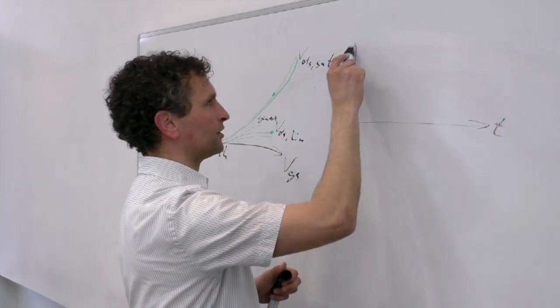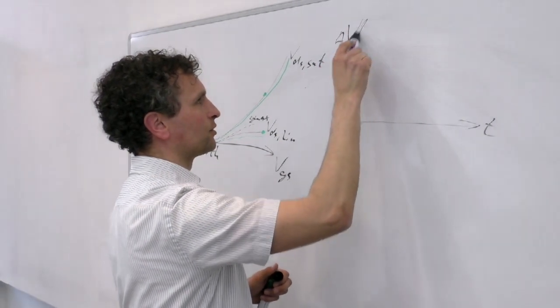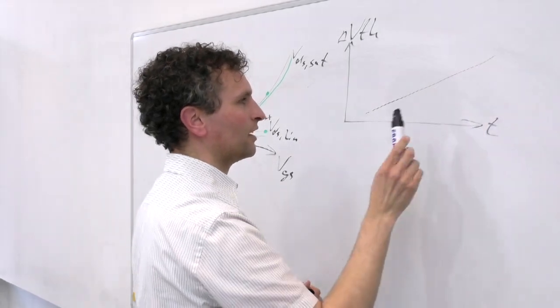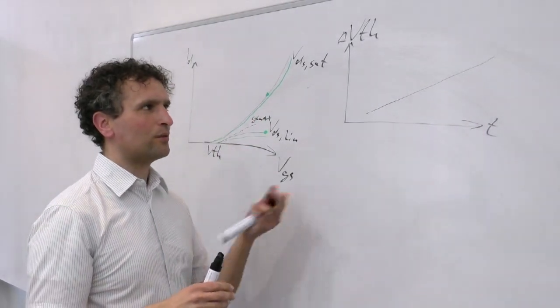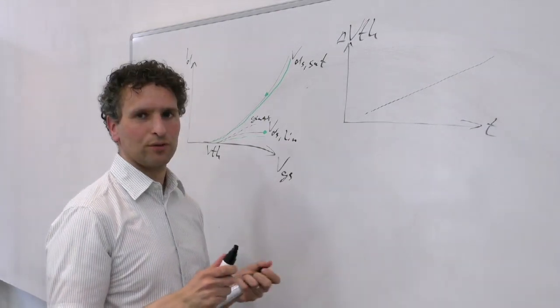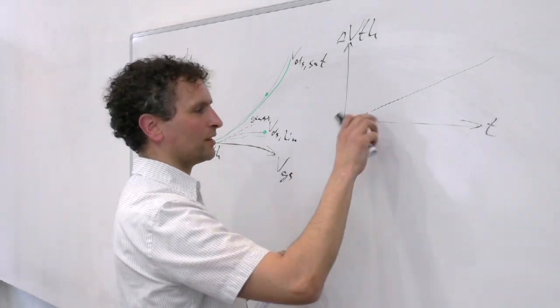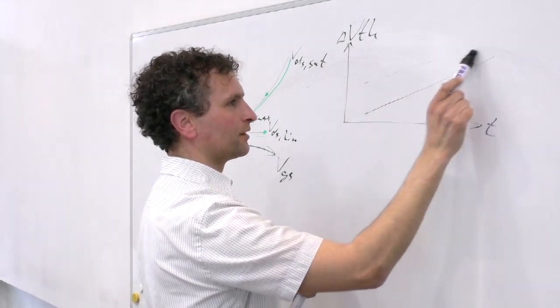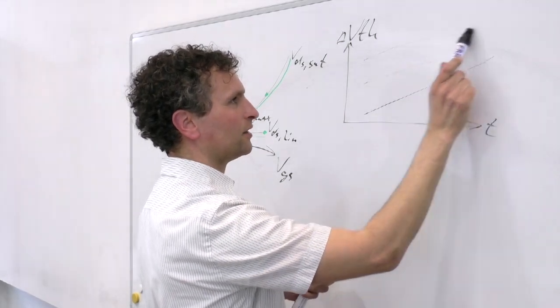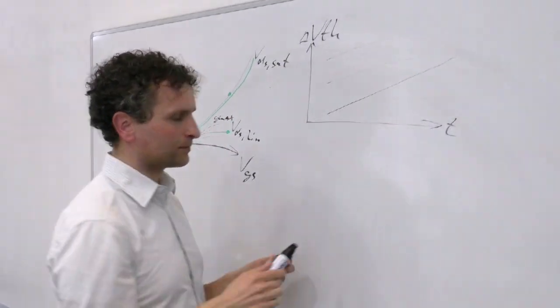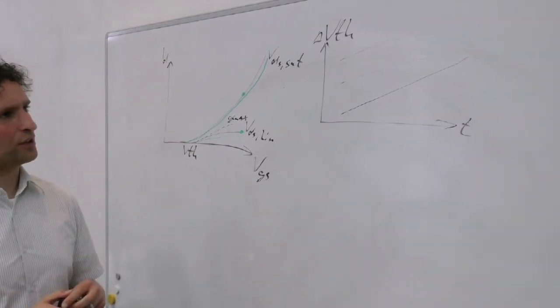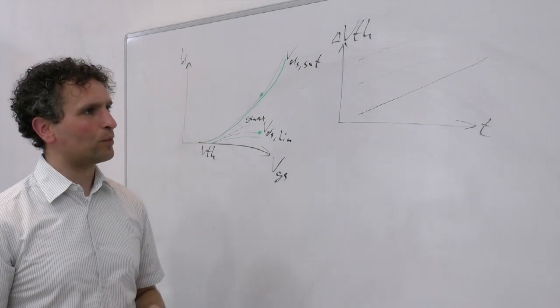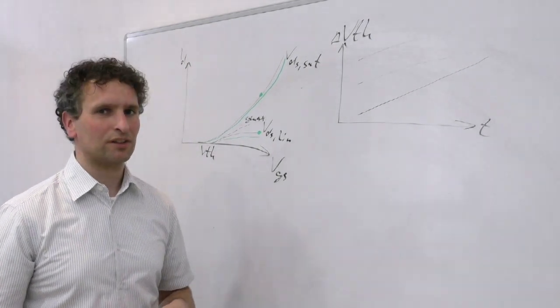And when you plot it on a log-log scale, the shift in the threshold voltage over time, you end up with curves like this. And they were pretty straight. And once you move to smaller technology nodes, you have some different effects. For example, the slope of this line gets smaller when you increase the stress and you end up with non-constant slopes of these curves. This is a particular effect that has been around for quite some time, but we believe that the impact gets worse at smaller technology nodes.